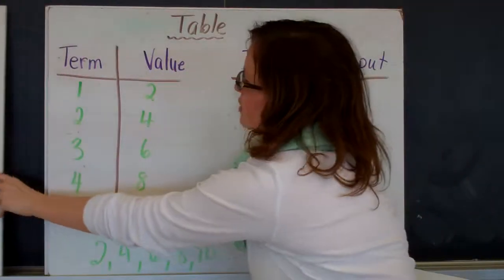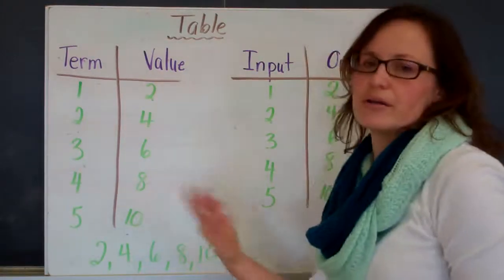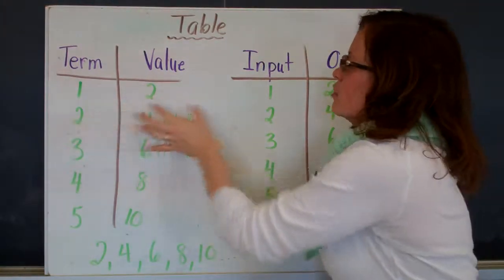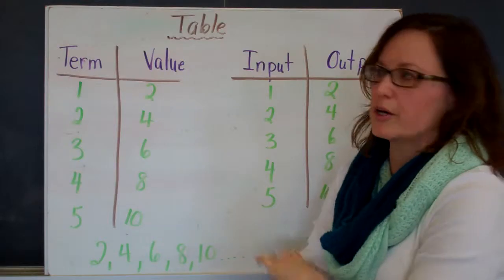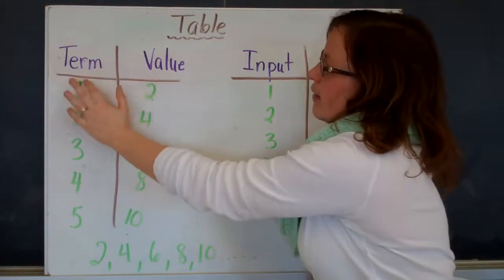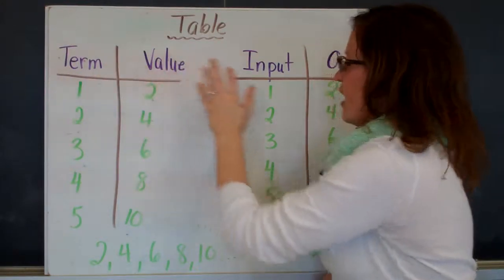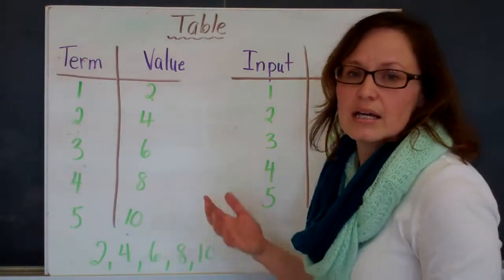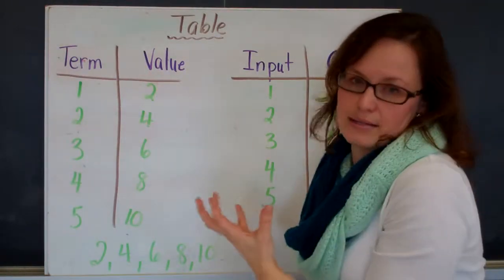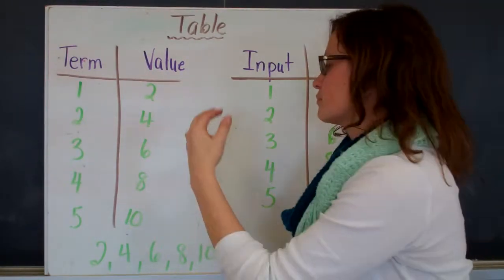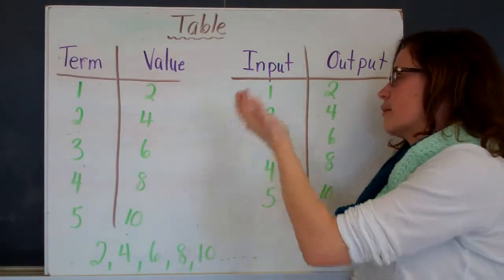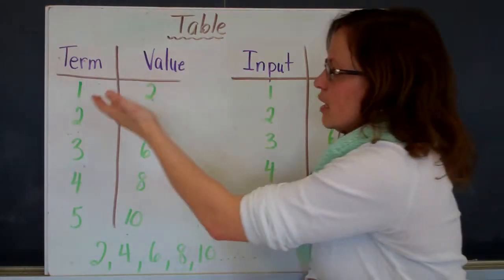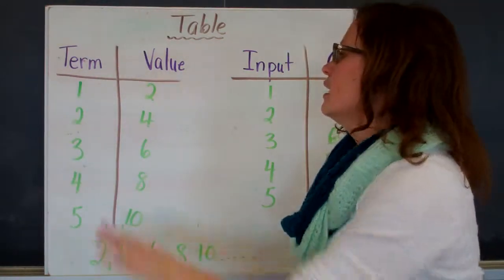First, we're going to talk about using tables to describe a number pattern. There are two different types of tables that you've probably heard about: one that has term and value, and one that has input-output as their titles. They're exactly the same, but sometimes questions will ask you to represent it in an input-output chart and some as term and value.